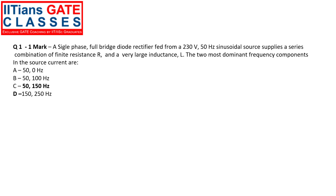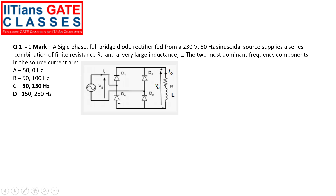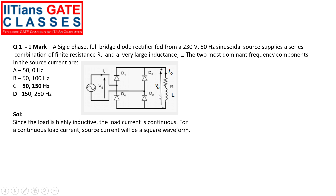Our first question is a one-mark question. A single-phase full bridge diode rectifier fed from a 230 volts, 50 Hz sinusoidal source supplies a series combination of finite resistance R and a very large inductance L. They are asking us to find out the two most dominant frequency components in the source current. On the left-hand side we have the source connected to an RL load by means of a diode bridge rectifier with four diodes D1, D2, D3, and D4. IS is the source current, I0 is the output current, V0 is the output voltage. Since the load is highly inductive, the load current is continuous, and for a continuous load current the source current looks like a square waveform.